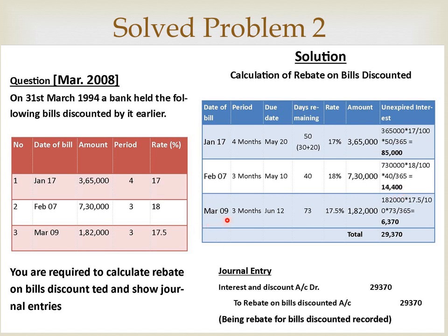For the third bill, March 9 is the issue date. Add 3 months: April, May, June — 9 plus 3 days grace period = June 12, giving 73 days remaining. The unearned interest for this bill is Rs. 6,370. The total interest unearned is Rs. 29,370. This should be deducted from the interest income in the profit and loss account and shown in the balance sheet as other liabilities. The general entry is: Interest and Discount Account Dr. 29,370 to Rebate on Bills Discounted Account 29,370 — being rebate for bills discounted recorded.